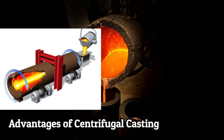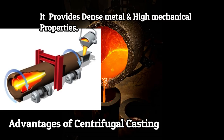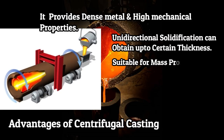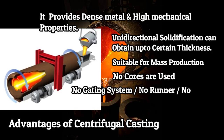The advantages of centrifugal casting include: it provides dense metal and high mechanical properties; unidirectional solidification can be obtained up to a certain thickness; it can be used for mass production; no cores are required for casting hollow shapes like tubes; gating systems and runners are totally eliminated; all impurities like oxides or slag particles segregate at the center from where they can easily be removed; it requires lower pouring temperature, thus saving energy; and there are lower casting defects due to uniform solidification.